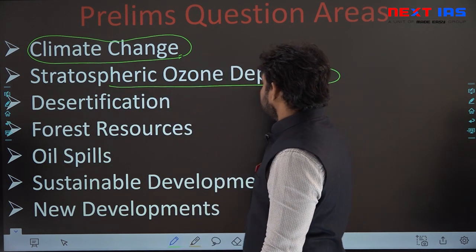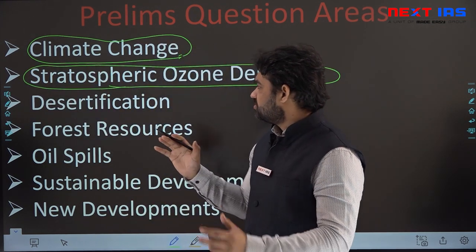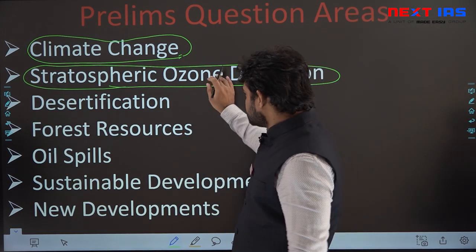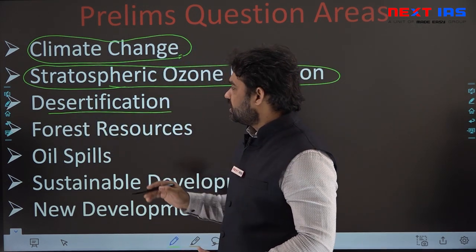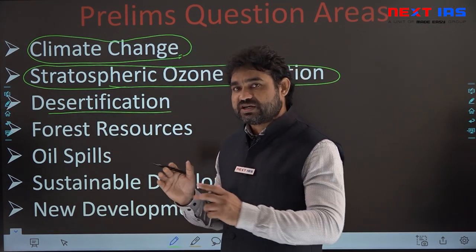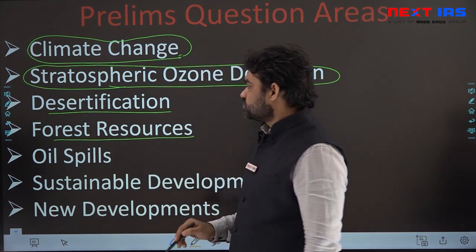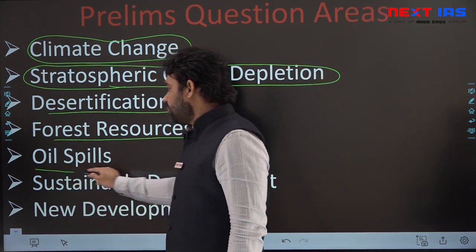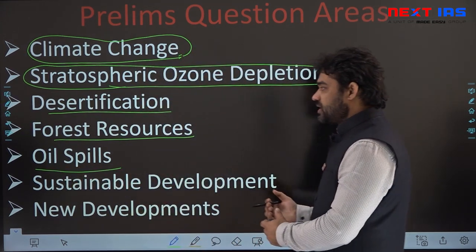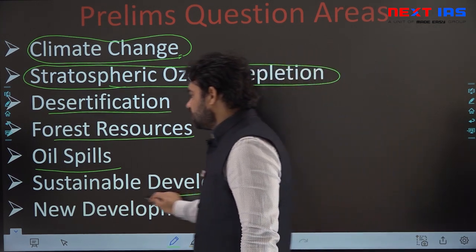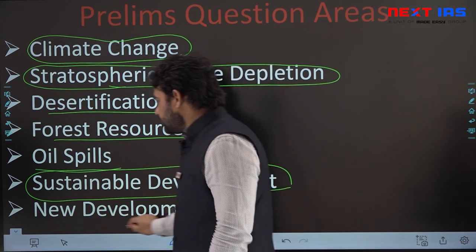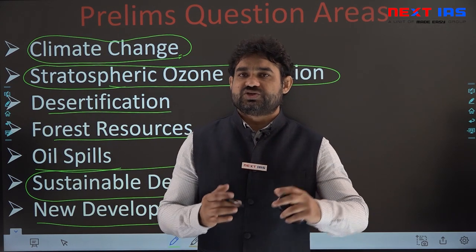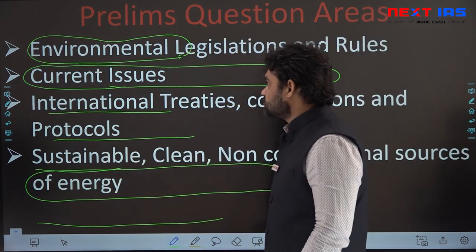Stratospheric ozone depletion is an area from which questions keep coming, and it is relatively more important from the prelims point of view. Desertification and deforestation is another area, especially the Indian State of the Forest Report related questions. Sometimes questions come from global environmental problems like oil spills. Sustainable development as a conceptual framework, plus new technological developments and new initiatives, are also areas from which questions come.